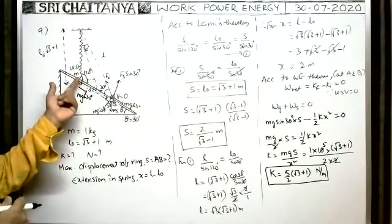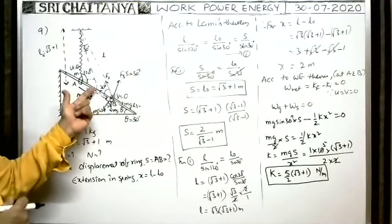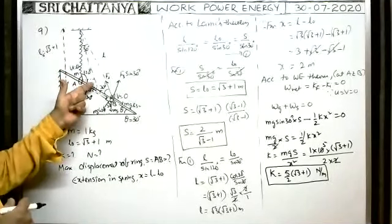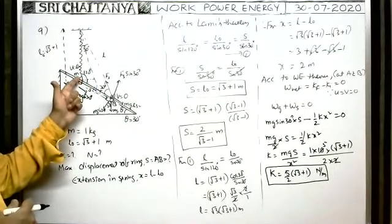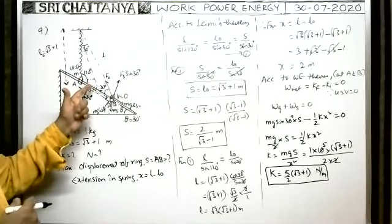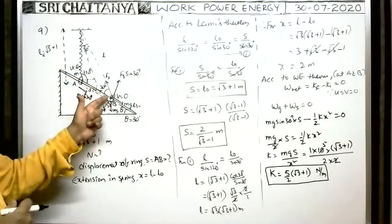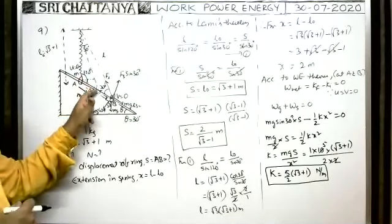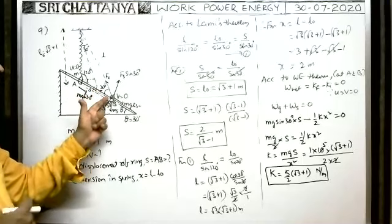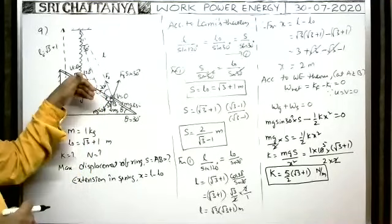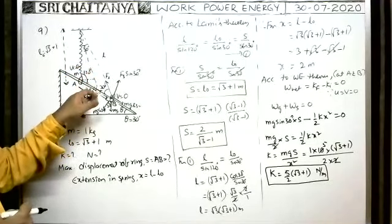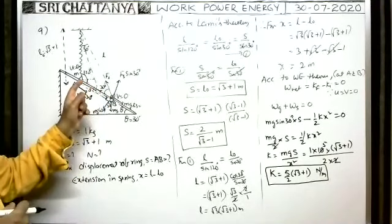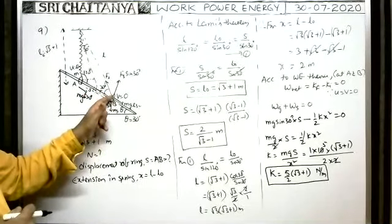As the ring gradually comes down to a certain position, the weight component balances the spring force component along the rod. Whenever these two are equal, the ring has been accelerating with increasing velocity up to that point — velocity becomes maximum there. After acquiring maximum velocity, due to kinetic energy the ring continues moving further. As the ring moves further, the spring extends more, so the spring force component exceeds the weight component, and the velocity gradually decreases until the ring reaches point B where velocity becomes zero.